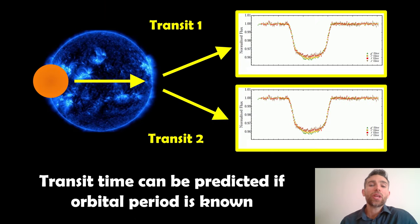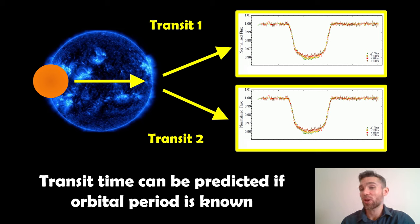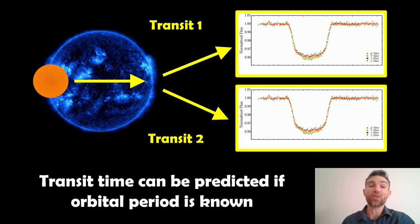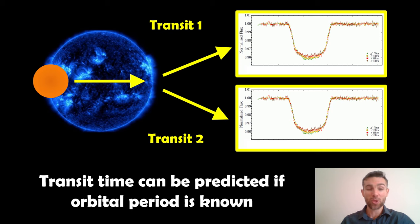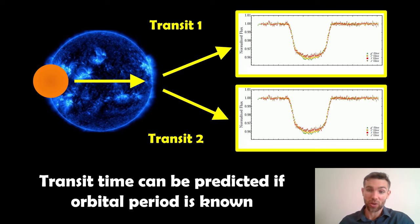Now if we know the orbital period of the planet we can predict when the next transit will occur. That's going to be very useful, because if we know when the transit is going to occur we can use additional observation methods at the same time. So whilst the planet is actually passing in front we can take spectroscopic measurements and measure the light of the star as it's going across.